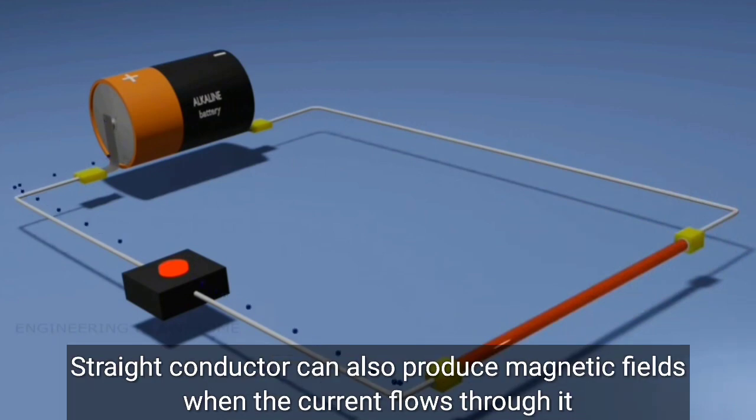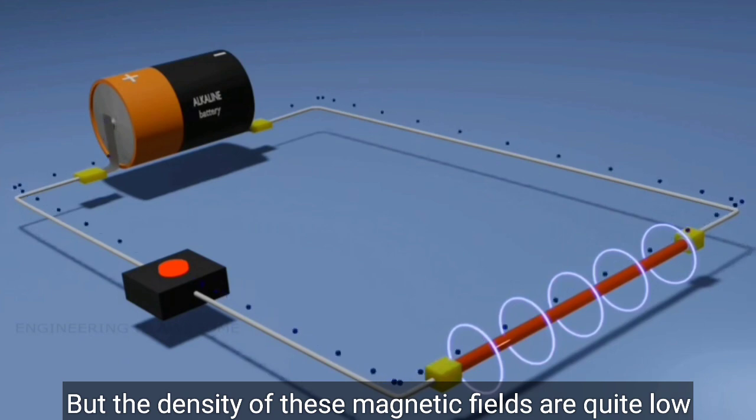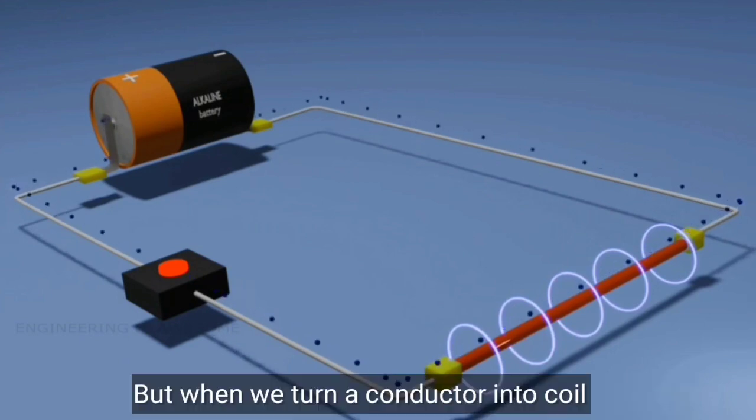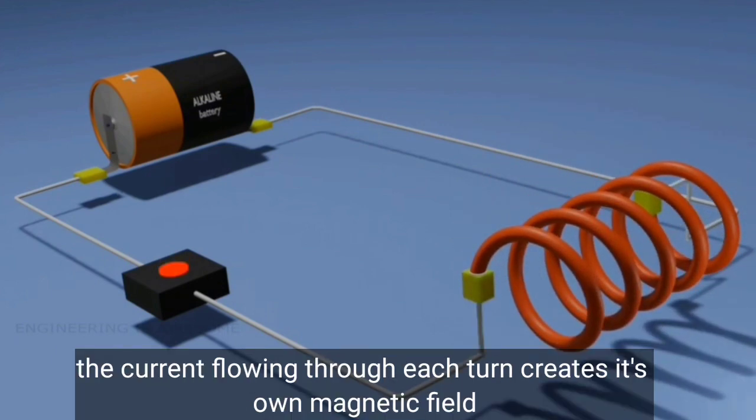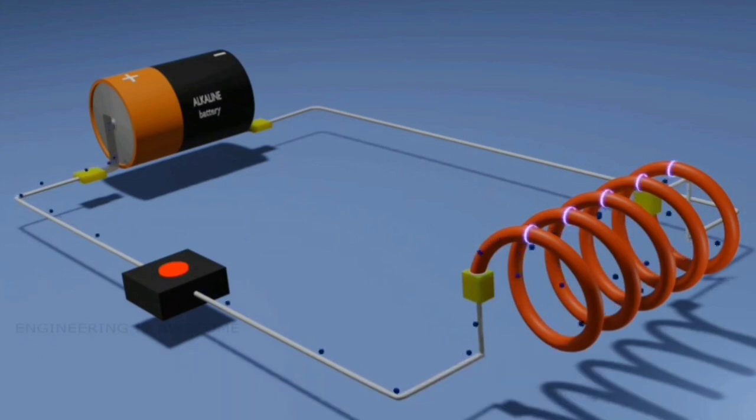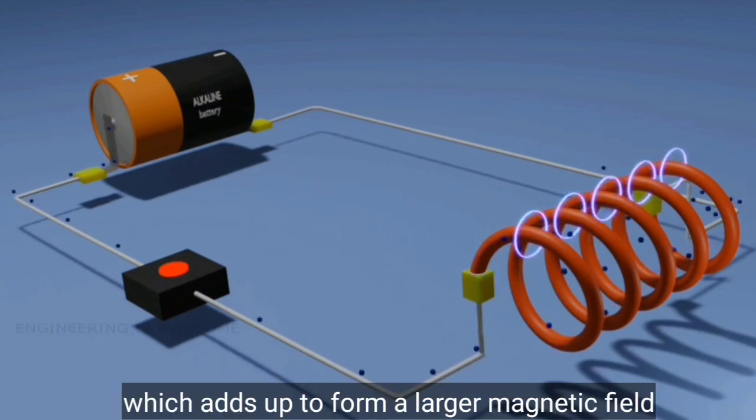A straight conductor can also produce magnetic field when current flows through it, but the density of these magnetic fields are quite low. But when we turn the conductor into a coil with a certain number of turns, the current flowing through each turn creates its own magnetic field which adds up to form a larger magnetic field.